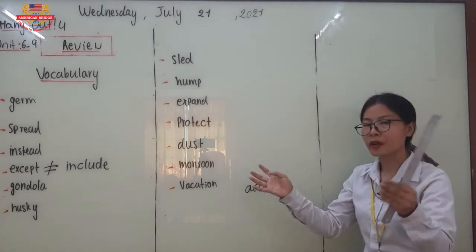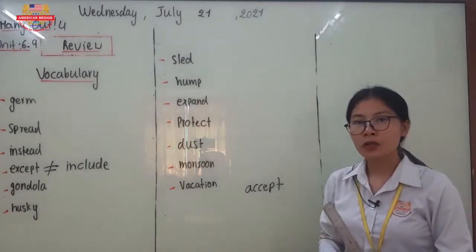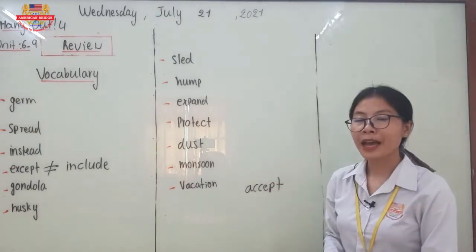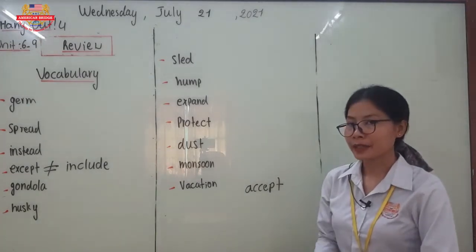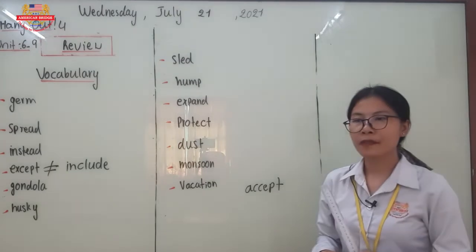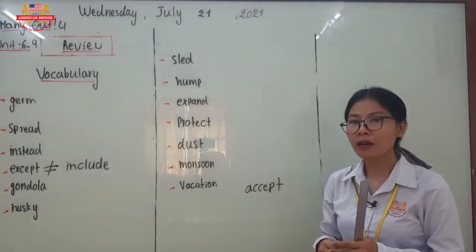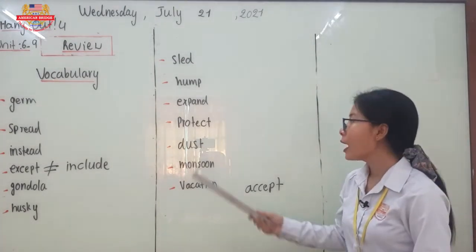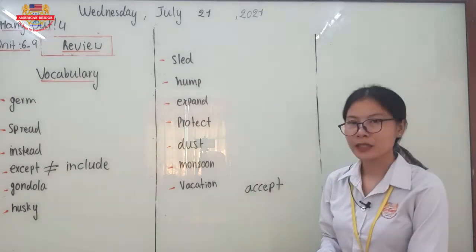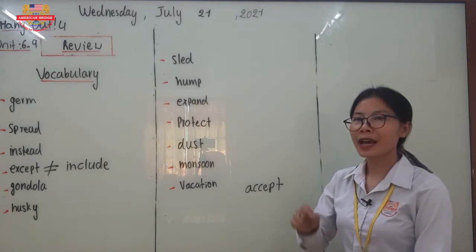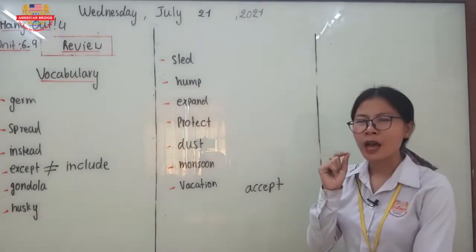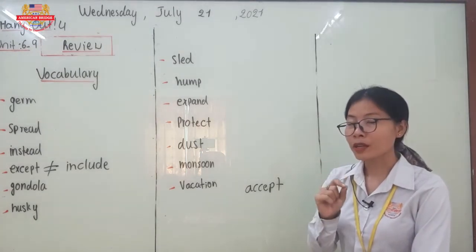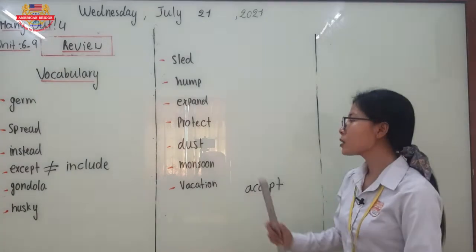Next, let's go to 'expand.' Expand means to make a thing bigger and bigger. After that, let's go to 'protect.' Protect refers to the kind of activity or action of keeping something or someone safe. Then let's go to 'dust.' Dust refers to the kind of small dirty thing that we sometimes cannot see with our own eyes.